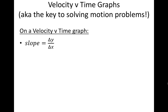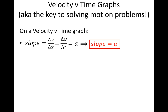We'll start by discussing the meaning of the slope of a velocity versus time graph. Recall that the slope is equal to delta y over delta x — change in y, rise, over change in x, run. On a velocity-time graph, the y coordinate is the velocity and the x coordinate is the time. You should recognize that delta v over delta t is the definition of acceleration. Therefore, the slope of a velocity versus time graph is the object's acceleration.